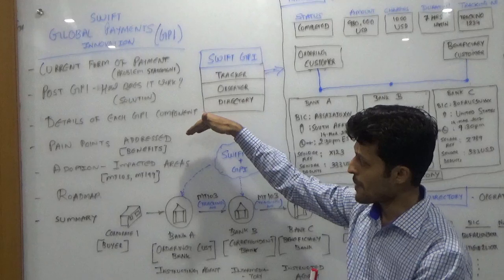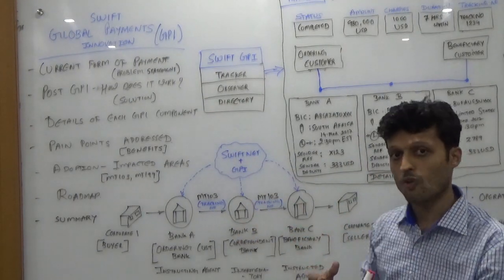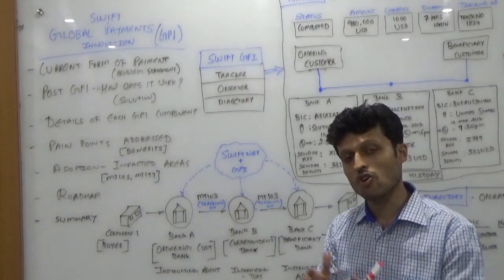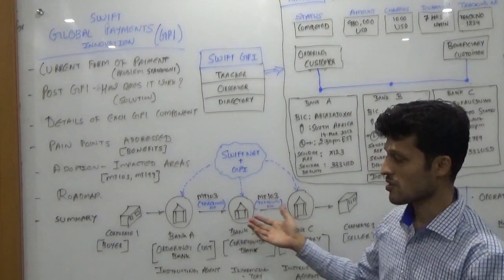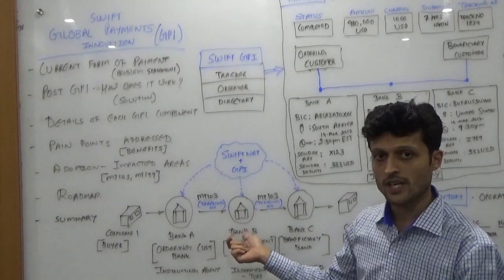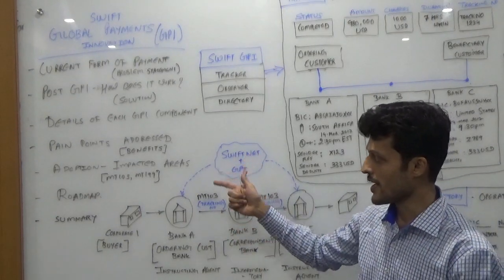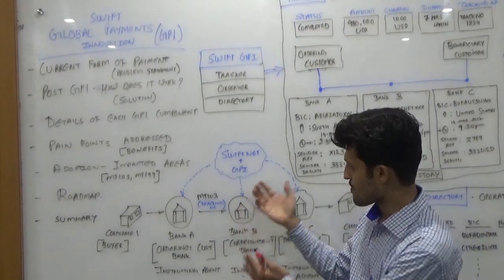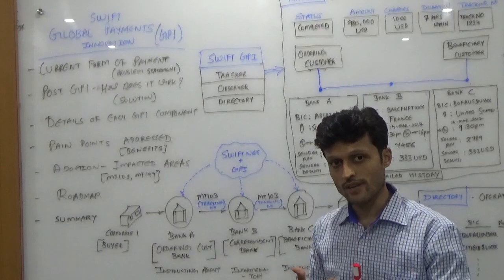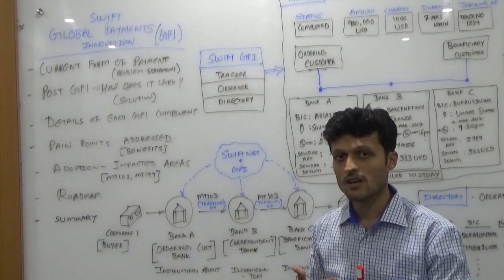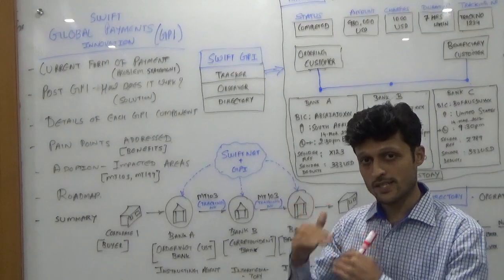Then we will talk about the pain points addressed. After addressing these pain points, what benefits you achieve as a corporate or as a bank — what objectives are being achieved, we will cover that. Finally, the adoption and impacted areas: to adopt Swift Net GPI, what changes we need to make in the environment or infrastructure as a bank, and what all impacted message types are.